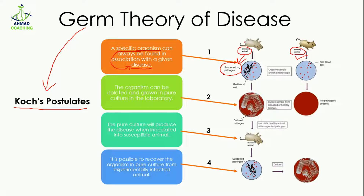The second postulate states: the organism can be isolated and grown in pure culture in the laboratory. When they grow the pathogen, other organisms are also present, but according to the second postulate you can isolate the suspected organism. You culture it and then you have a pure culture of that particular pathogen — 'pathogen' meaning the microorganism causing the disease. You separate it from other organisms to obtain a pure culture, meaning all organisms on the plate are the pathogen.